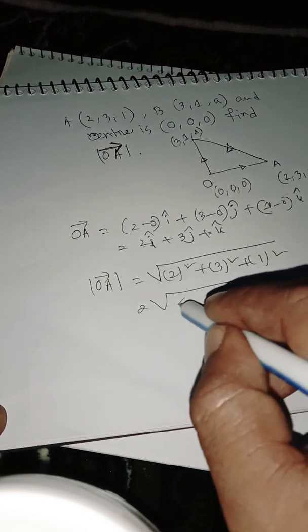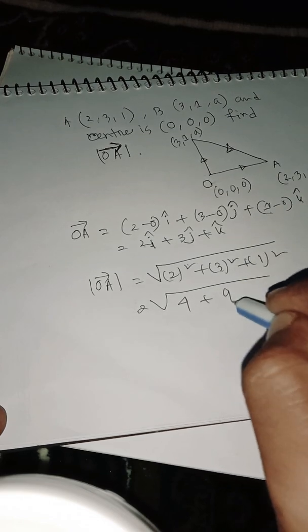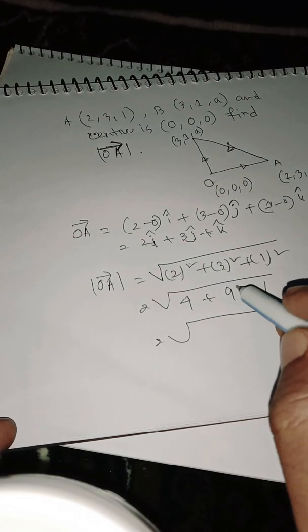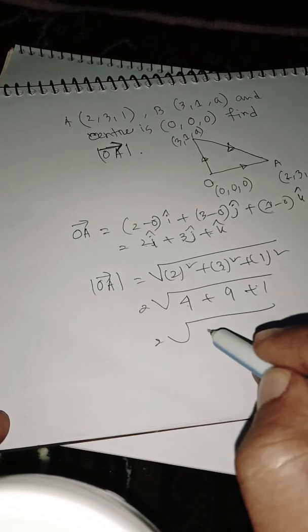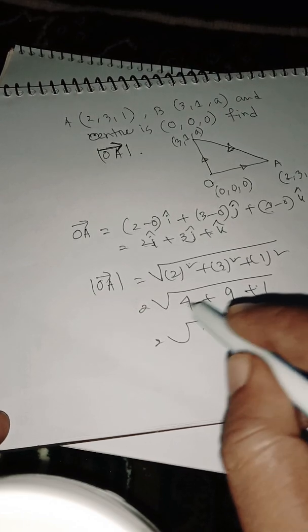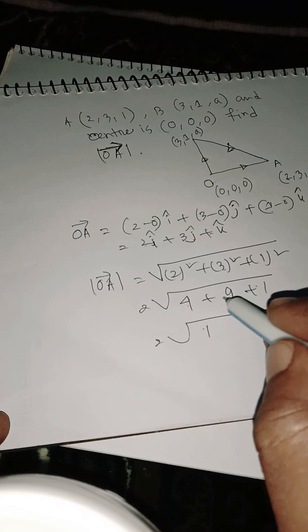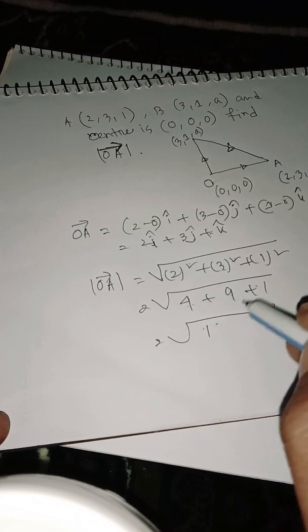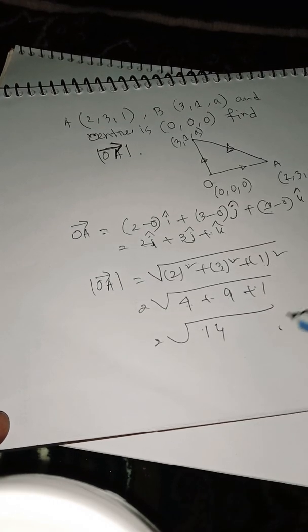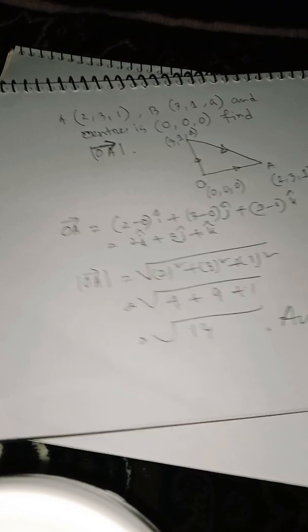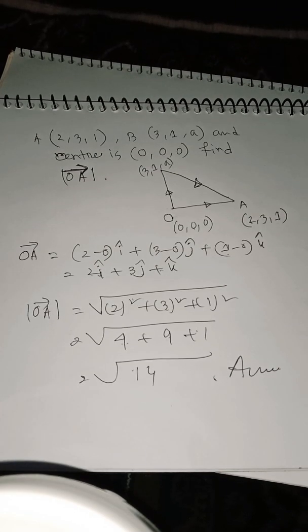2 squared is 4, plus 3 squared is 9, plus 1 is... 9 plus 4 is 13, plus 1 is 14. So the answer is square root of 14.